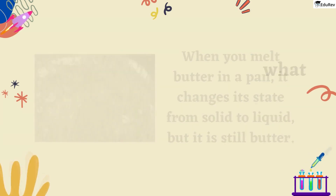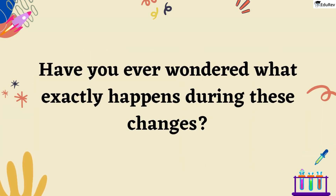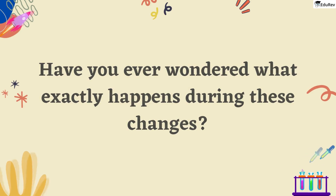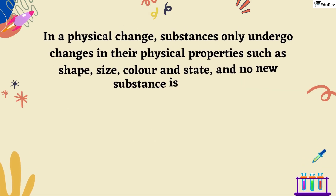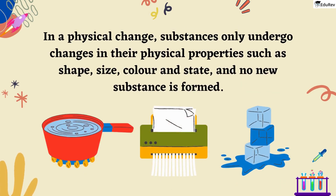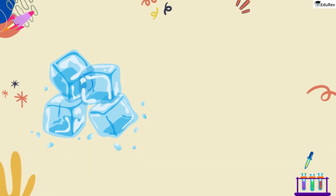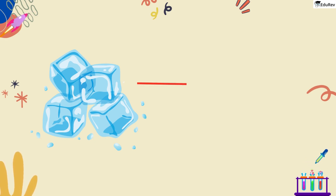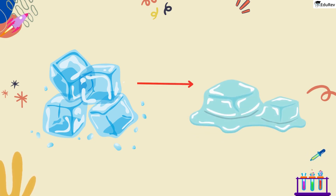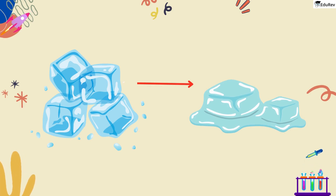But have you ever wondered what exactly happens during these changes? In a physical change, substances only undergo changes in their physical properties such as shape, size, color and state, and no new substance is formed. So if you have a block of ice and you leave it outside in the sun, it will melt and become water. But it's still the same water molecules, just in a different state.